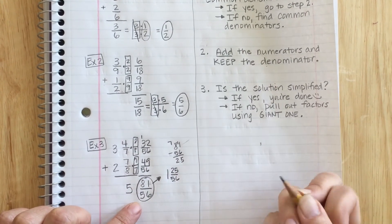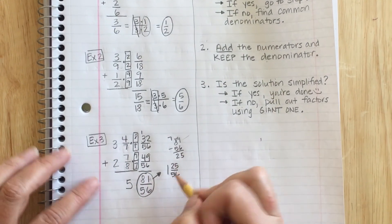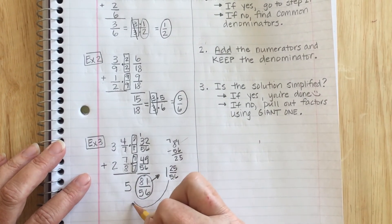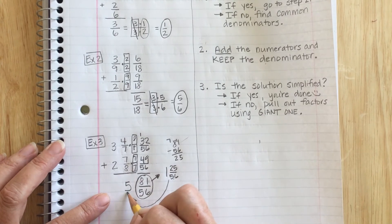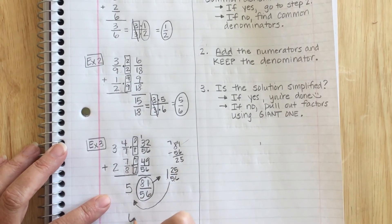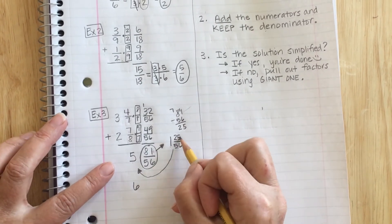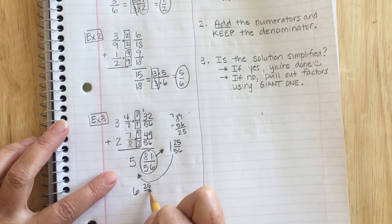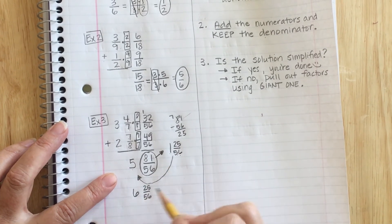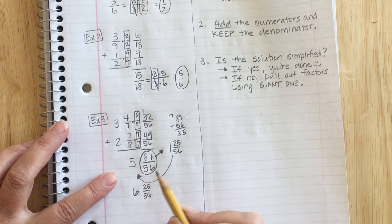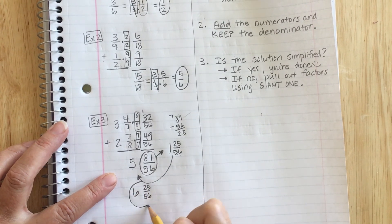Remember, always keep the same denominator. Now that I've turned this into a mixed number, I have to add it back to my whole number. So I have 5 plus 1 is 6. And 25/56. Now there's no numbers that go into both 25 and 56. So I am done.